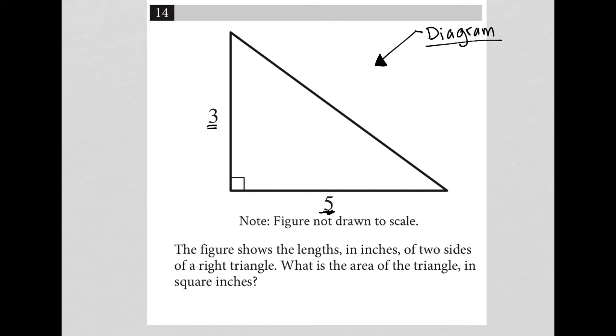But this is still a right triangle, right? So I can still figure out what that side is by using the Pythagorean theorem.